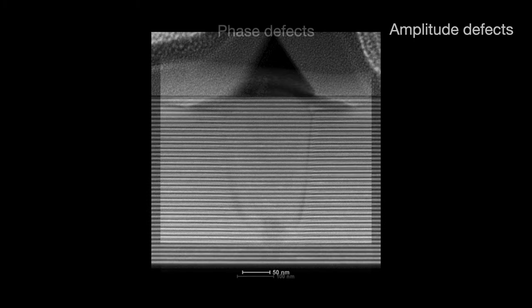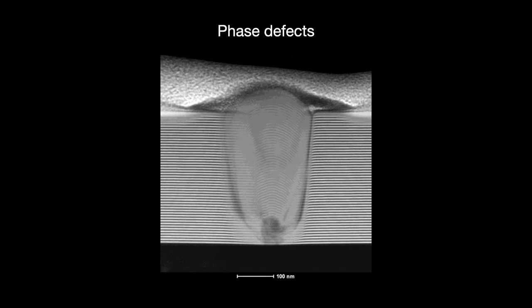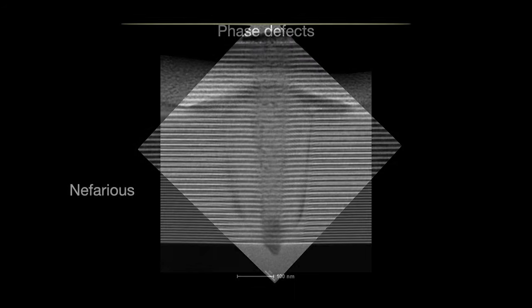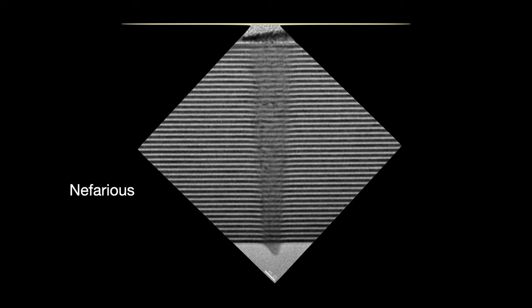Phase defects are more nefarious. These are bumps and defects on the surface of the mirror layer. Many of these come from particles or pits on the substrate surface, which then get layered over during the deposition steps. Phase defects are arguably more sucky because they are very pronounced and as a result are very printable. A phase defect as small as 1 nanometer in height or depth can print onto the wafer.